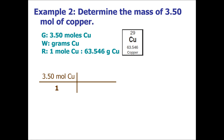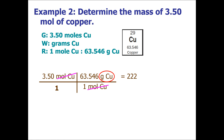We start the problem with the given over 1: 3.50 moles of copper over 1. I look for the unit of moles in my ratios and place 1 mole of copper in the denominator so units cancel diagonally, and 63.546 grams of copper in the numerator. Multiplying the numerators: 3.50 × 63.546, then dividing by the denominator values — which are all 1s, so I skip those. Rounded to 3 significant figures, the answer is 222 grams of copper.